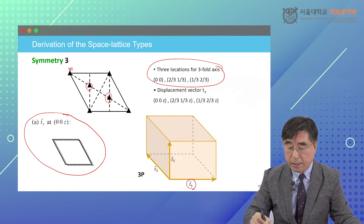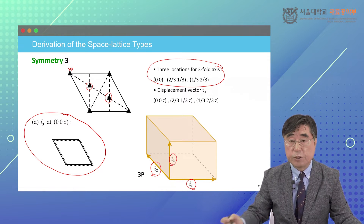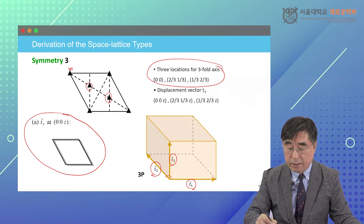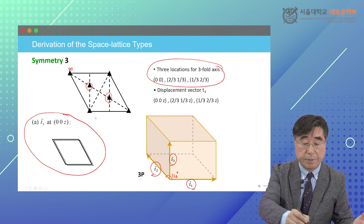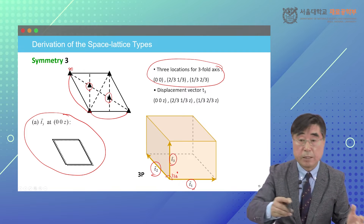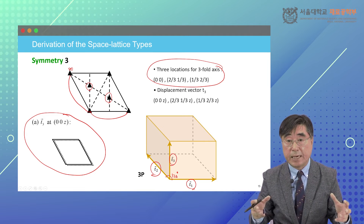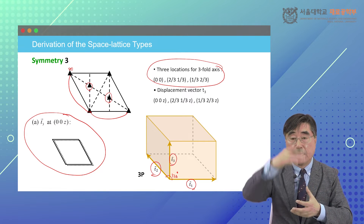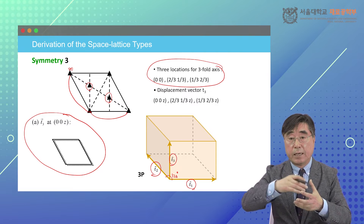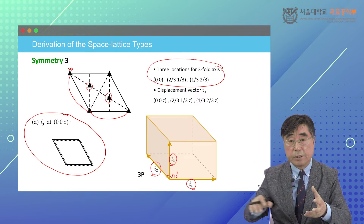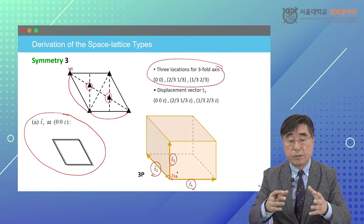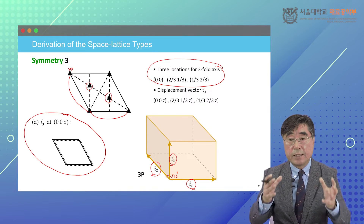Then T1 vector, T2 vector, and T3 vector are defined. The angle in this case is 120 degrees, and T1 and T2 vectors should have the same magnitude. The T3 vector has a 90-degree angle with T1 and T2 vectors, so a new crystal system is defined.